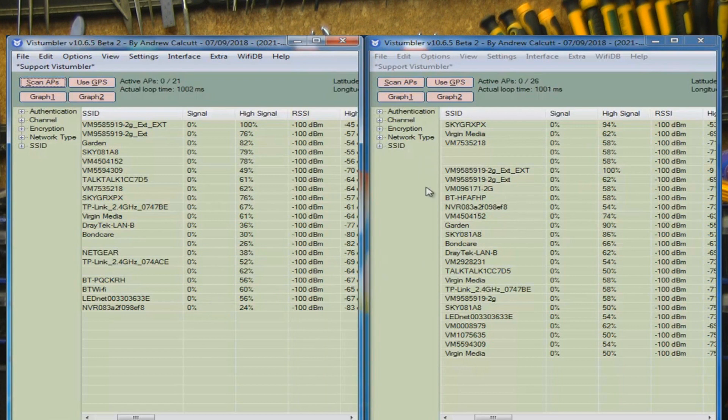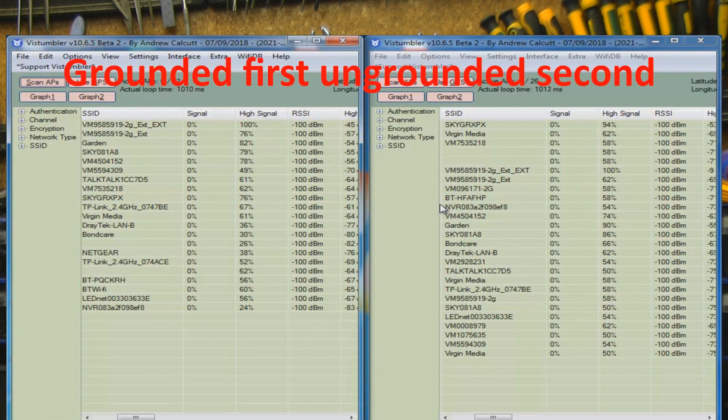And basically overall, the grounded reflector is a lot better than the ungrounded one. Now let's move on to the test where we test whether the upload and download speed of a real-world connection is any different. So we'll look at the ungrounded one first and then we'll look at the grounded one second.